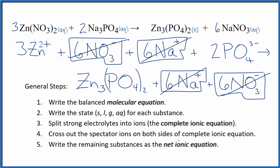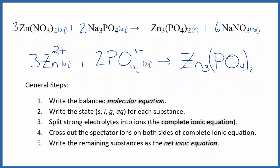What's left is the net ionic equation for Zn(NO3)2 plus Na3PO4. I'll clean it up and write the states. This is the balanced net ionic equation for zinc nitrate plus sodium phosphate.